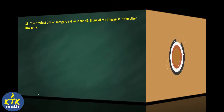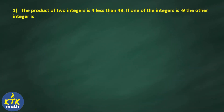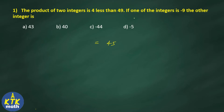Question number one: the product of two integers is 4 less than 49. If one of the integers is minus 9, find the other integer. The options are 43, 40, minus 44, minus 5. The product of two integers is 4 less than 49, which means 45.